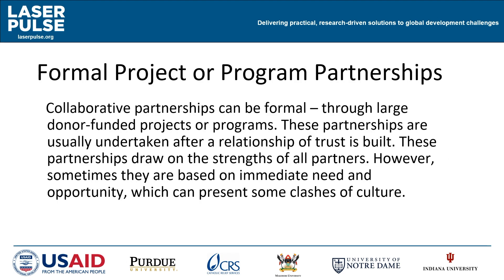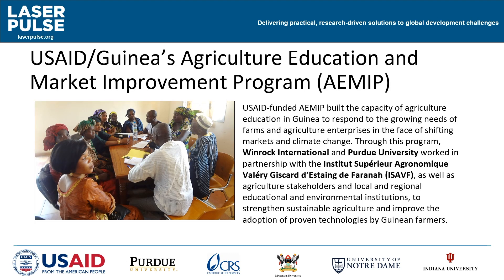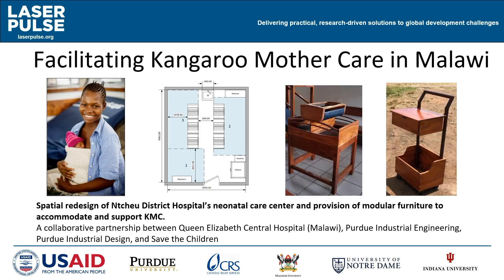Collaborative partnerships can be formal through large donor-funded projects or programs. These partnerships are usually undertaken after a relationship of trust is built and draw on the strength of all partners. The following examples draw on past experiences of LaserPulse Consortium member collaborations: USAID Guinea's Collaborative Agriculture Education and Market Improvement Program to strengthen sustainable agriculture and improve adoption of proven technologies by Ghanaian farmers; and a partnership among Queen Elizabeth Central Hospital in Malawi, Purdue, and Save the Children to facilitate kangaroo mother care.